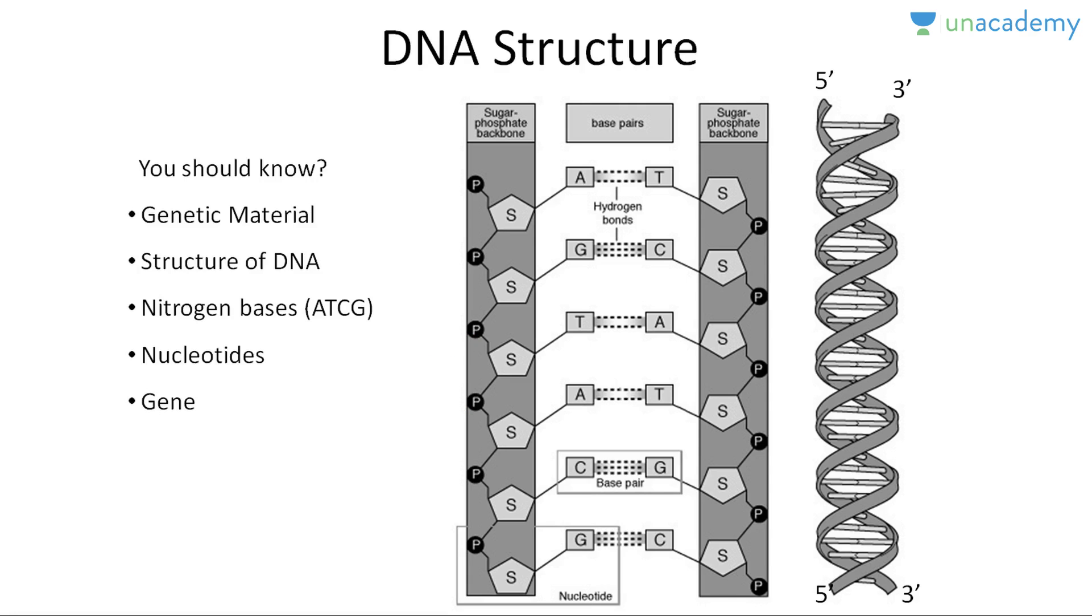Now this chain of polynucleotide forms one strand of DNA, while the chain of another polynucleotide forms another strand of DNA. So this is the detailed structure of DNA what you have just seen.